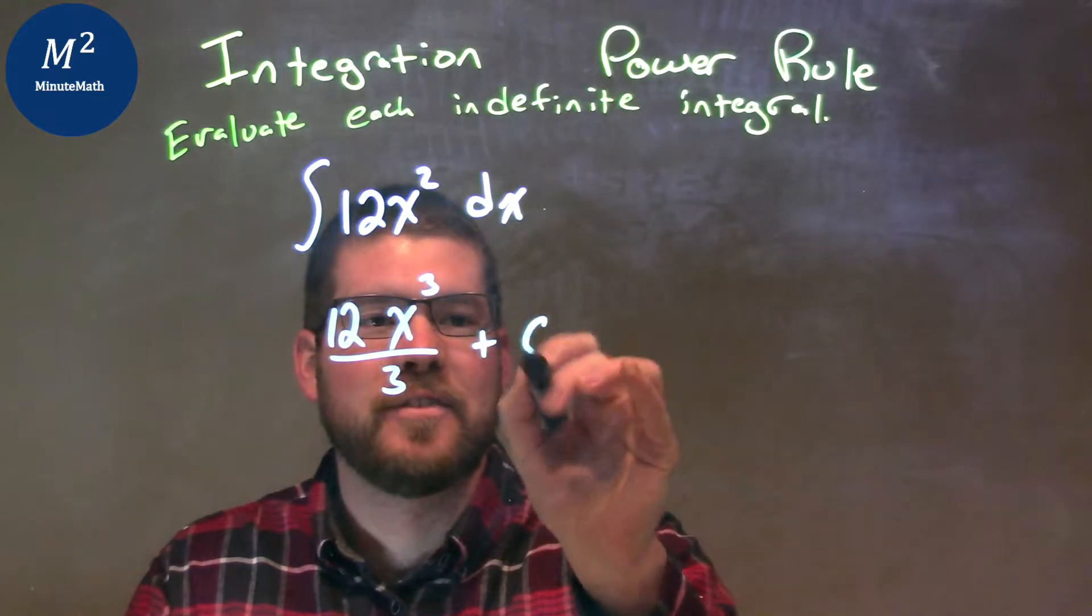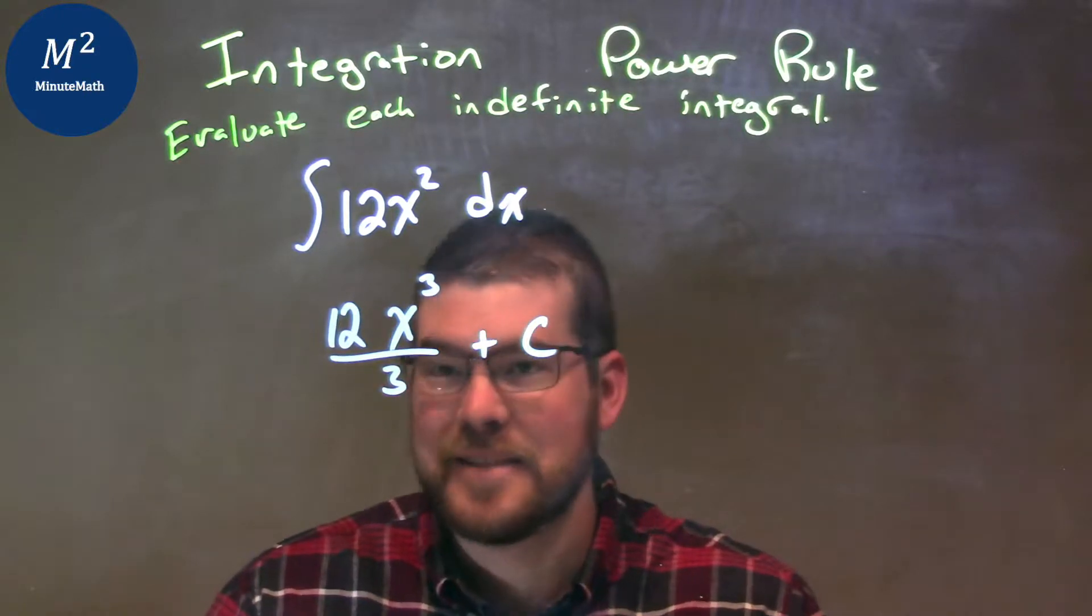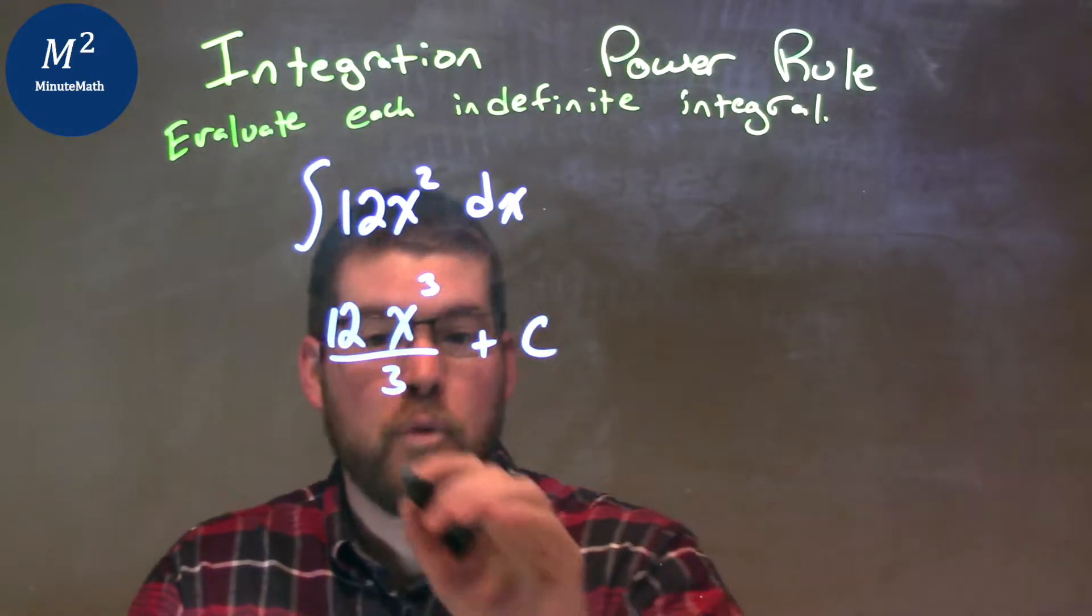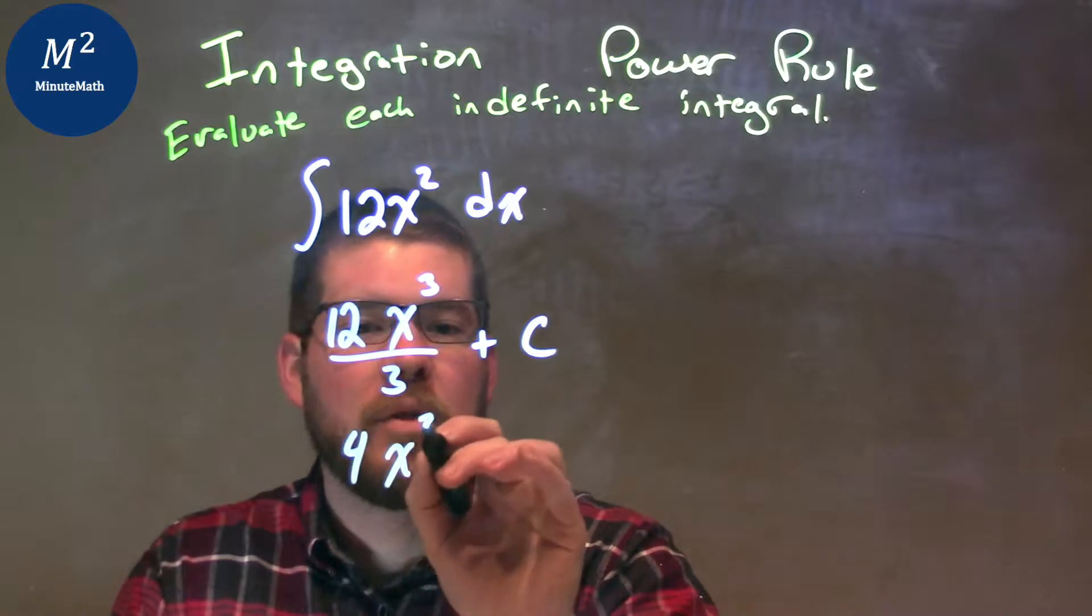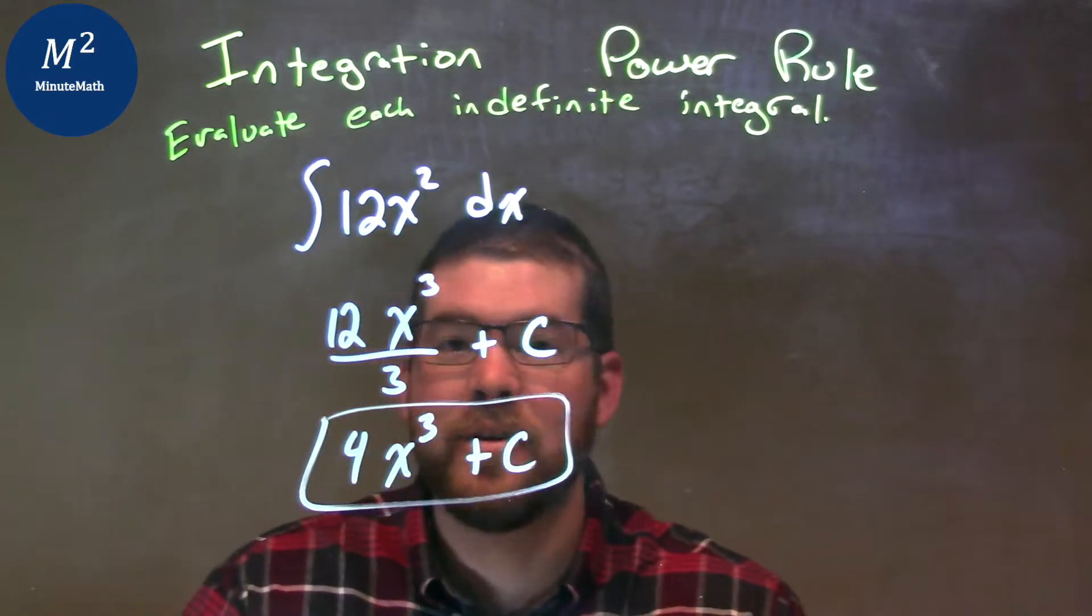Now, I can't forget my plus C. So from here, I've taken the indefinite integral, and I can simplify. 12 divided by 3 is pretty easy, that's a 4. So we have 4x to the third plus C, and that's it, that's our final answer, that's our indefinite integral.